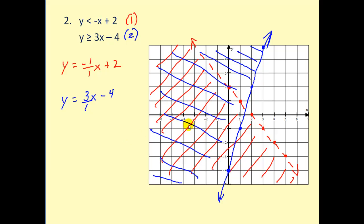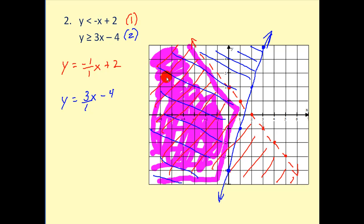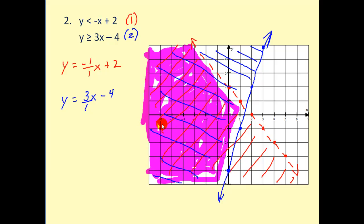The double shaded region is our solution — you can see it's the region on the left. The region is bordered by the dashed line and the solid line. If we picked a point in this region and substituted the x and y values, both inequalities would be true with the same values.